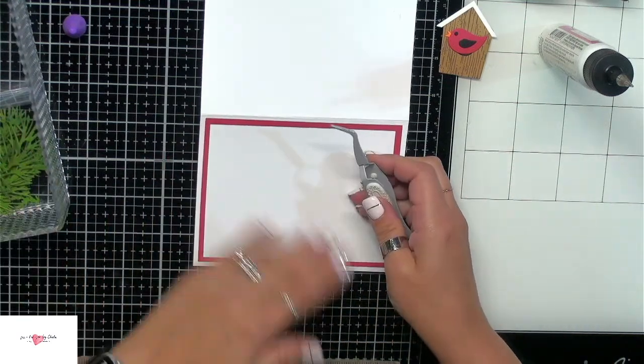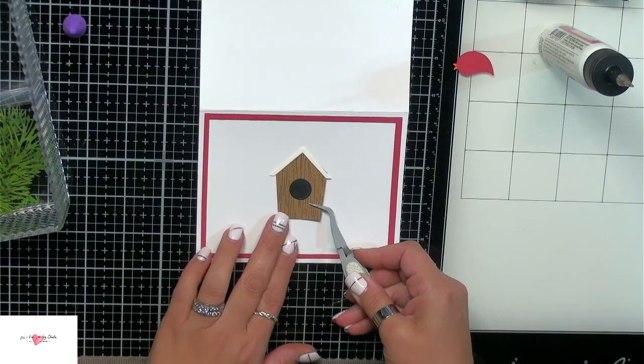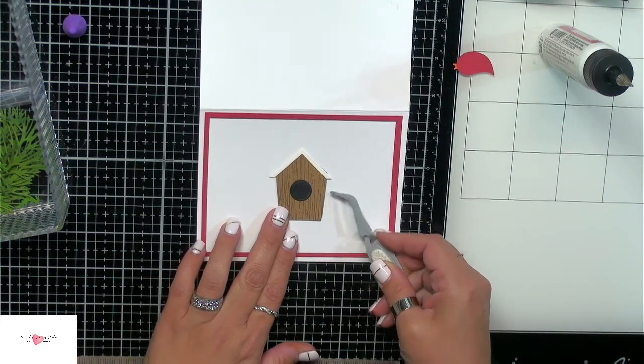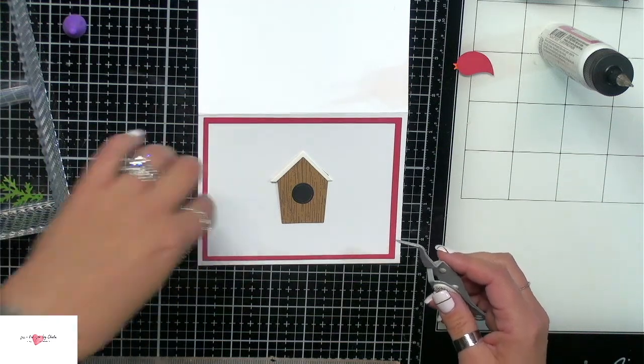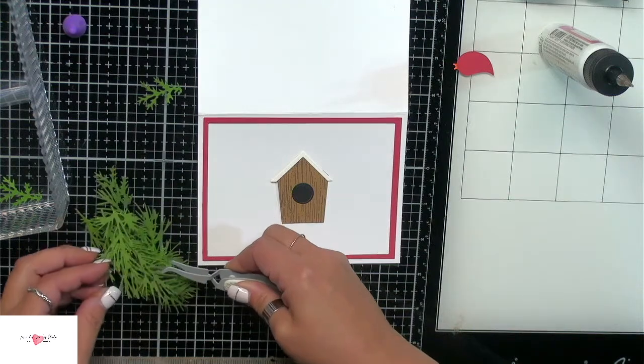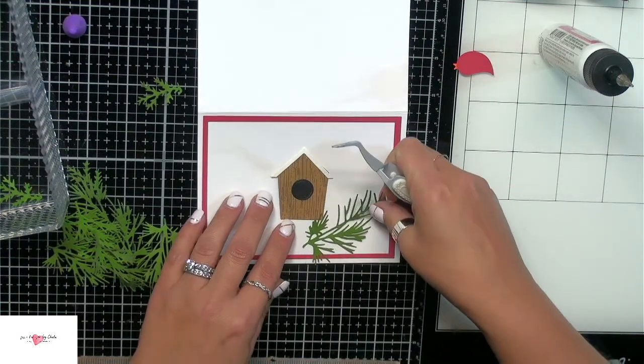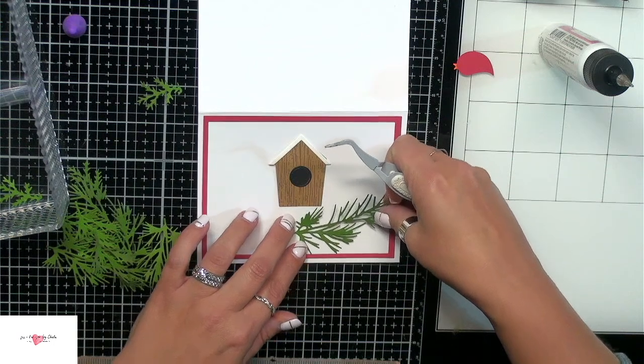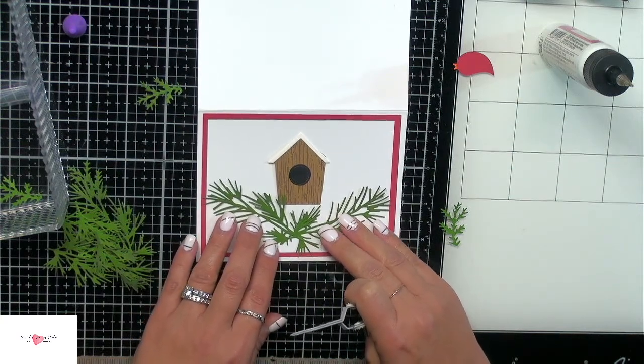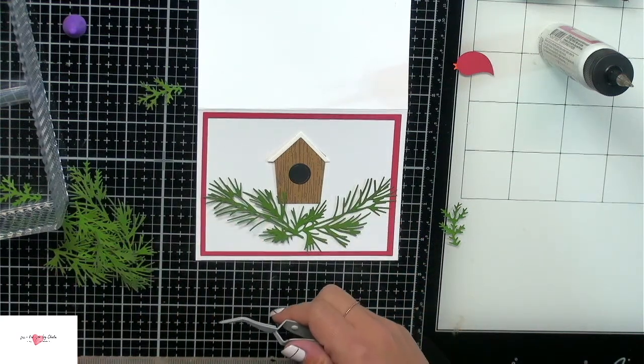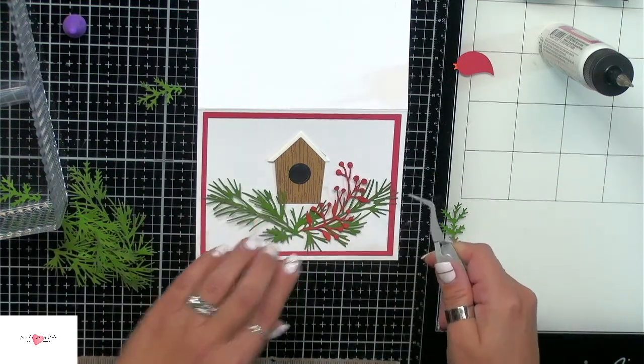So I want to kind of have the foliage go around. I wanted the birdhouse kind of in the middle. I'm just going to put this here for now. We're not going to glue it down. I'm going to pull out all these little die cut pieces. I want to start building almost like a wreath kind of around it. I'm not sure how many of these pieces I'm actually going to need. I just die cut quite a few out. That's kind of pretty. Then I will add in maybe these berries.